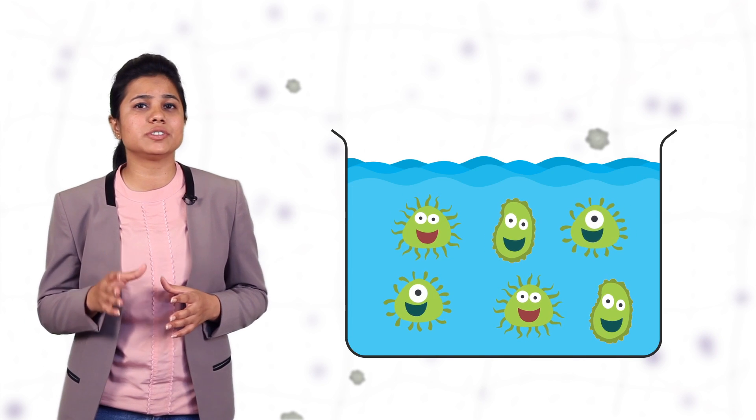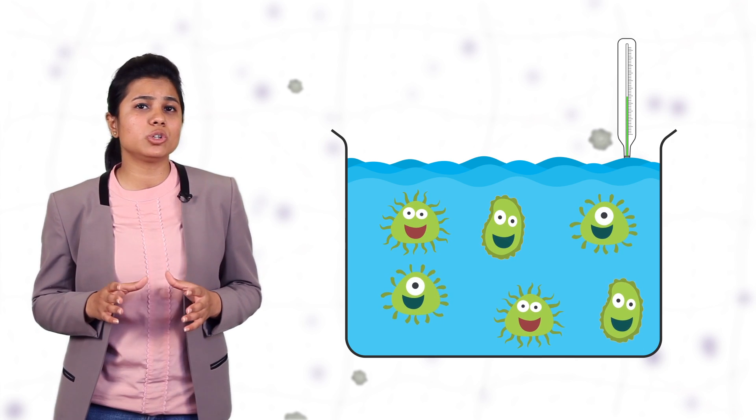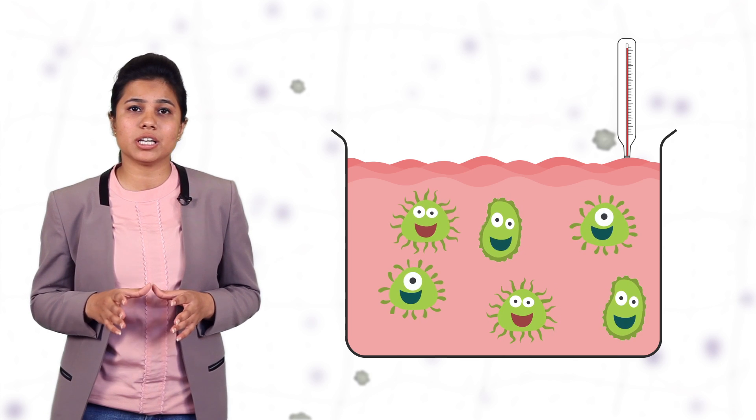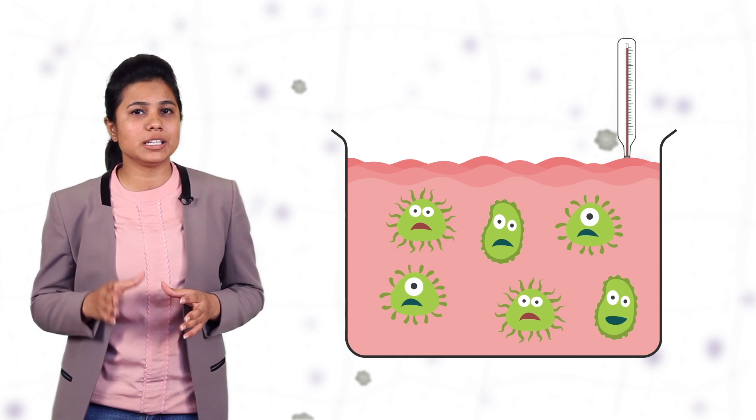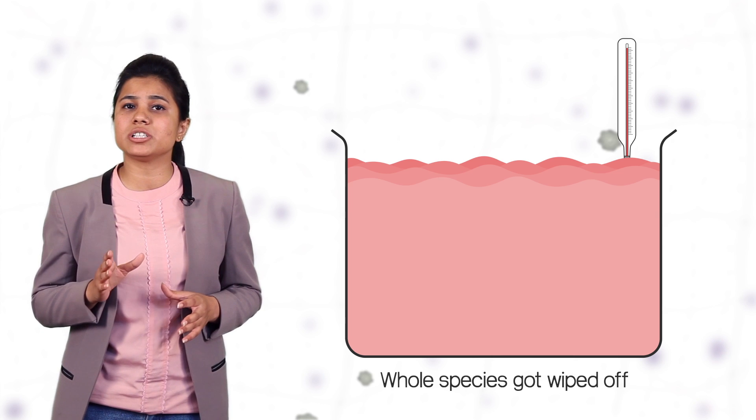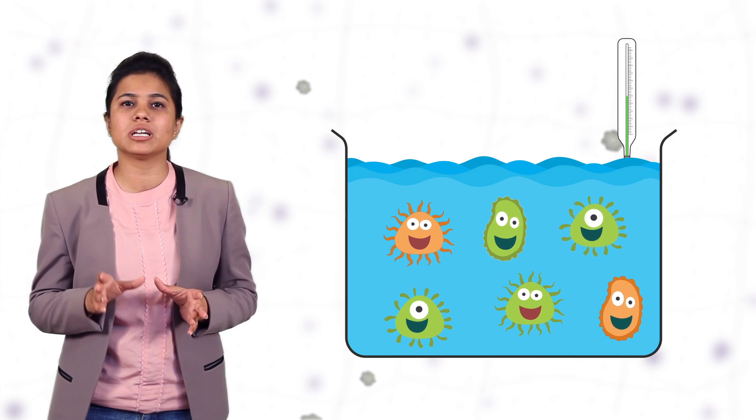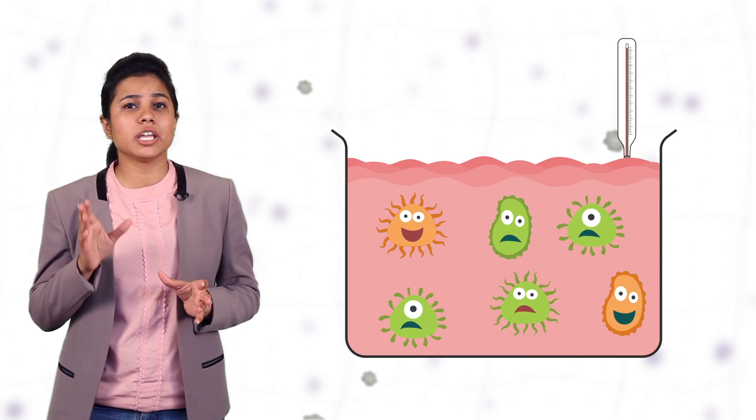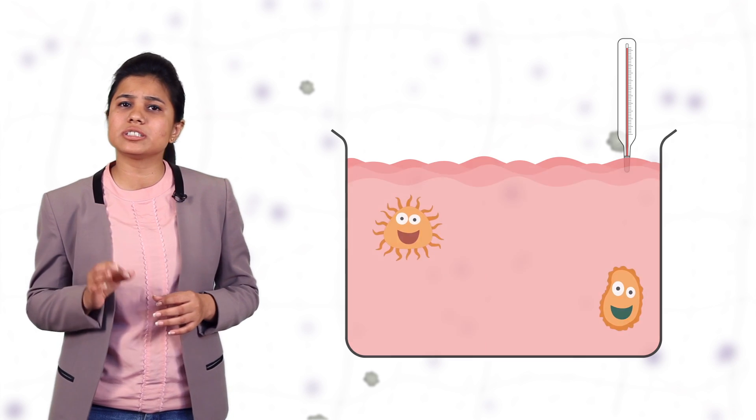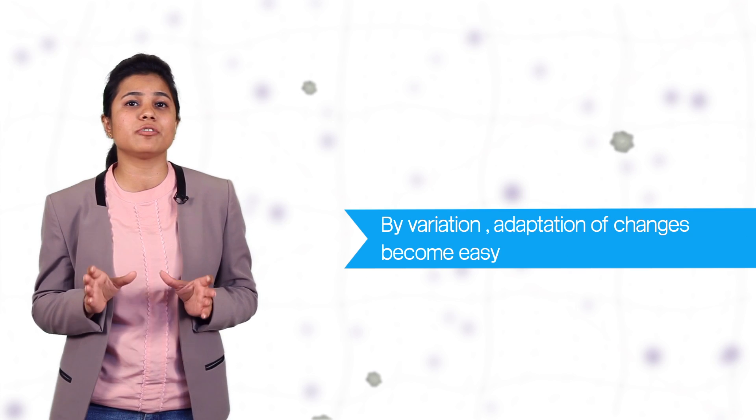Suppose a species of bacteria lives in temperate waters, it means they are accustomed to moderate temperature of water. Now, due to global warming, the temperature of the water body increases. If all the individuals of the bacteria are similar, they will not be able to tolerate the increase in temperature and will ultimately die. So, due to rise in temperature, the whole species gets wiped off. But, if there would have been some variations in few individuals of bacterial species and they would have become more resistant to heat, then they could have survived and the species could be safe from becoming extinct. So, this is the reason variation is necessary as adaptation of changes become easy and it is important for a species to survive.